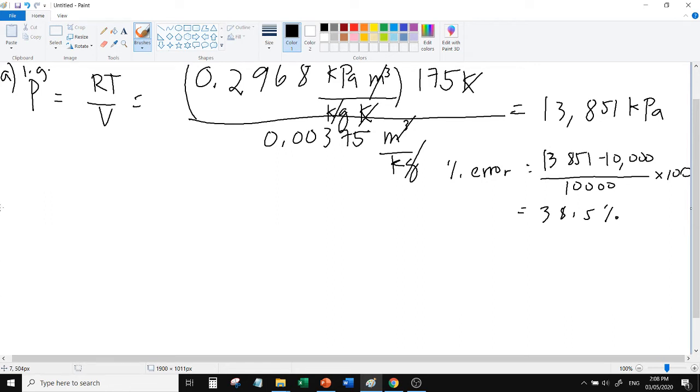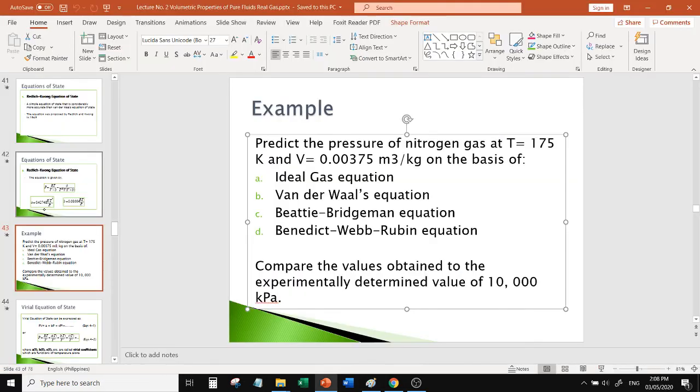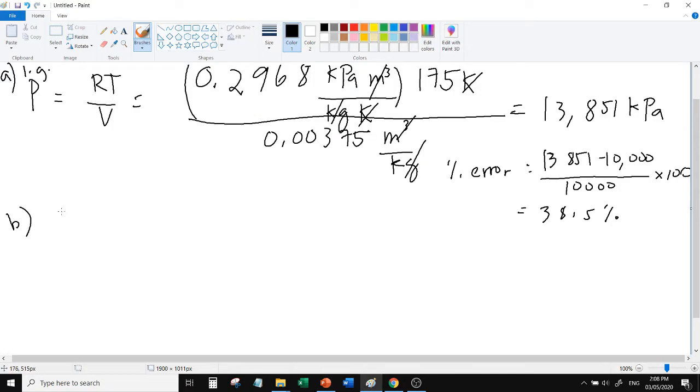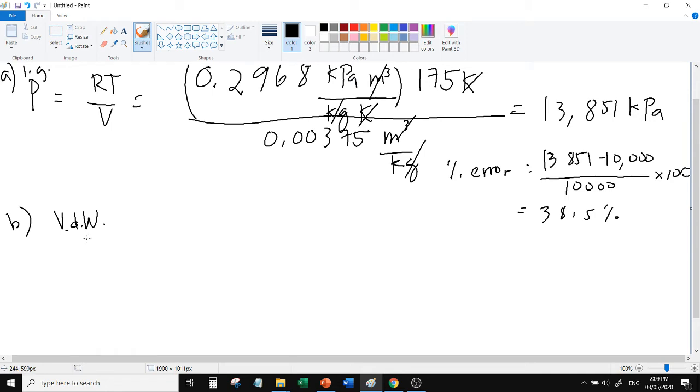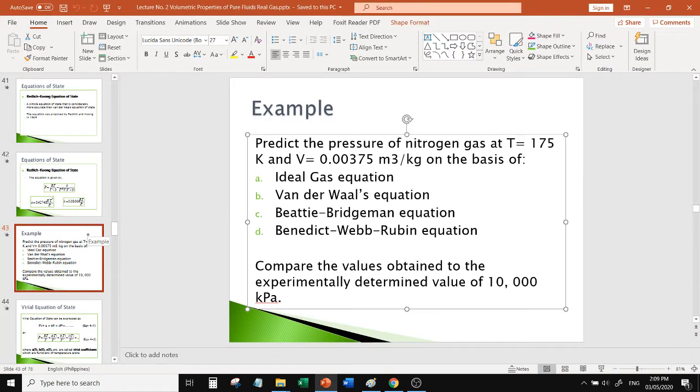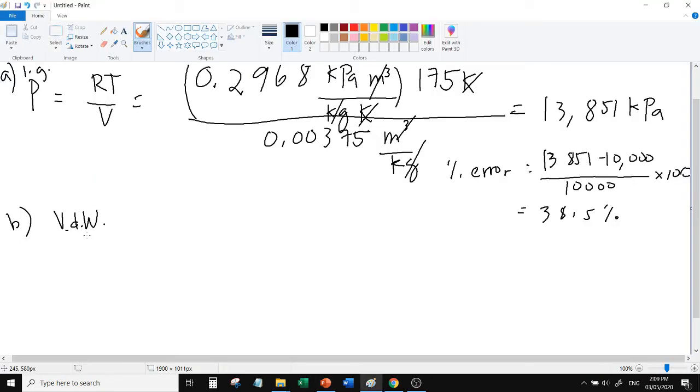Next, let's try letter B. Letter B is Van der Waals equation. First let's calculate the constants, but in order to calculate the constants of Van der Waals equation we need the critical values for nitrogen gas. We'll get these from literature. The critical temperature equals 126.2 Kelvin.